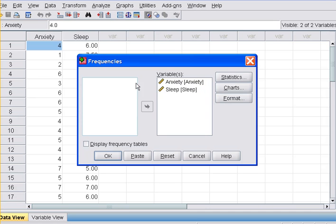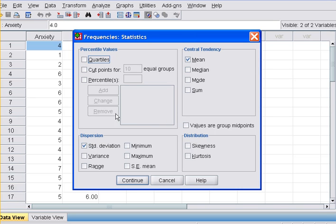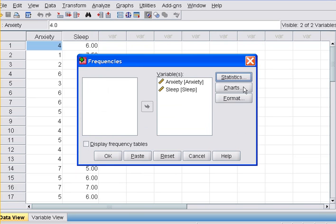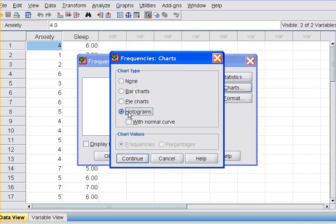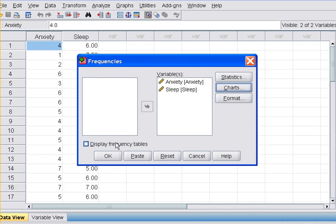I have anxiety and sleep already moved over. For statistics, I have mean checked and standard deviation checked. For charts, I have the histogram. You can do it with or without the normal curve, up to you. And I don't need the frequency table here, so I had it unchecked. I say okay.